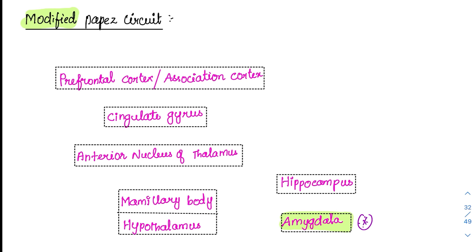The Papez circuit represents interconnections between various nuclei whose ultimate function is for emotion and behavioral aspects of the person. In this circuit, the hippocampus is like the beginning spine. Both the hippocampus and the amygdala give their influences to the mammillary body of the hypothalamus. We will see that among the structures of the hypothalamus, there is one region called the mammillary body.